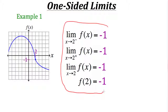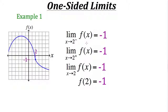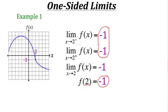We're looking at all these aspects of the graph because it helps us determine continuity at a certain point, which is vital in future aspects of calculus. To determine if a function is continuous at x equals 2, our one-sided limits need to be the same value as the output of the function at that x value. Since all three are negative 1, we can say the function is continuous at x equals 2.